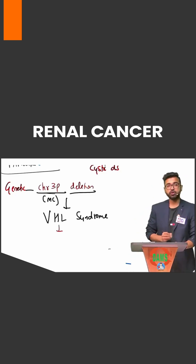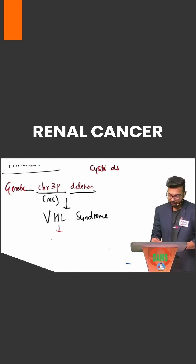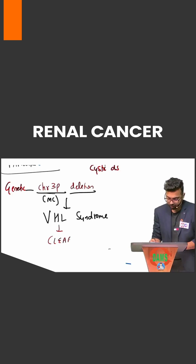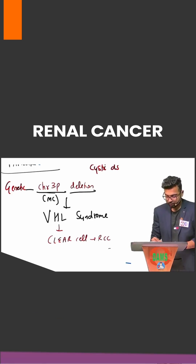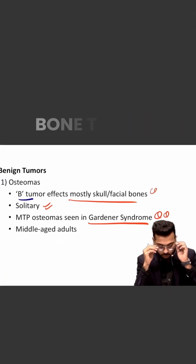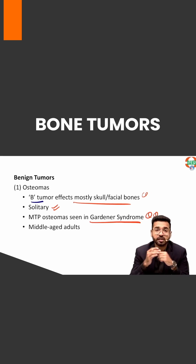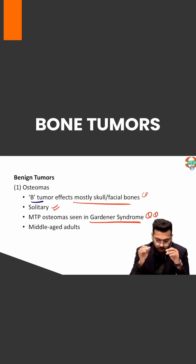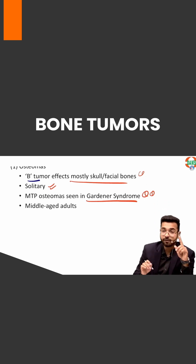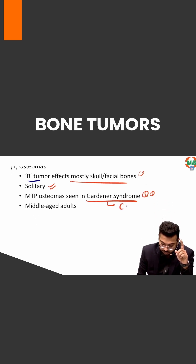Remember, it is the clear cell variant of RCC that is most common in VHL syndrome. Now, multiple osteomas are seen in Gardner's syndrome. Normally, osteomas are a single tumor, but in Gardner's they are multiple and involve the skull and facial base. I have told you the pathology in Gardner's syndrome previously.